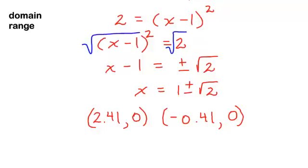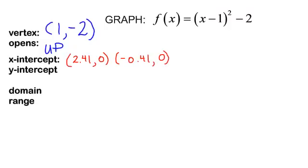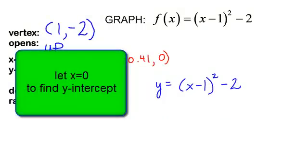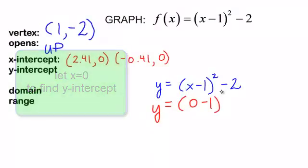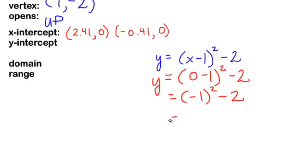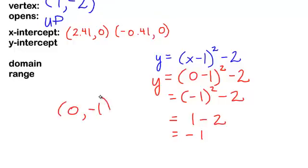We have found our x-intercepts. Now let's find our y-intercept. I am plugging into my equation — in order to find the y-intercept, you will let x equal 0. So this would be y is equal to 0 minus 1 squared minus 2. In the parentheses I simply have negative 1 squared minus 2, and negative 1 squared is positive 1. So my y-intercept is negative 1 — when my x is 0, my y-intercept is negative 1.